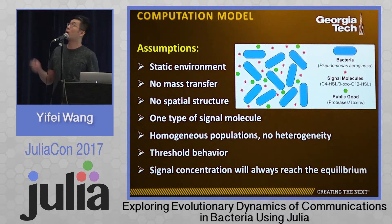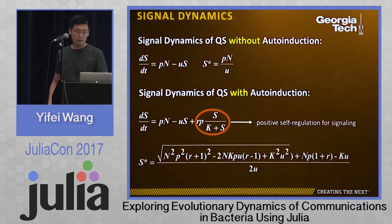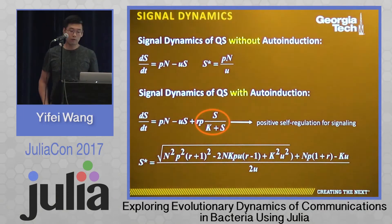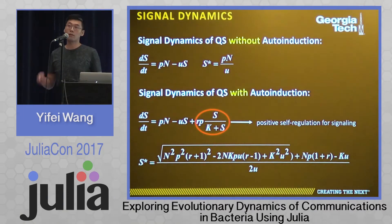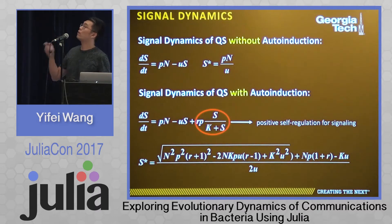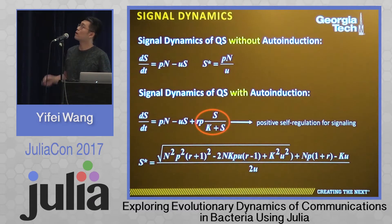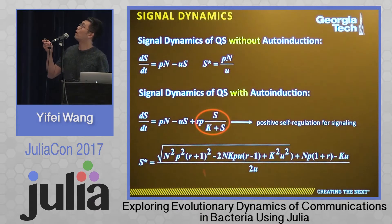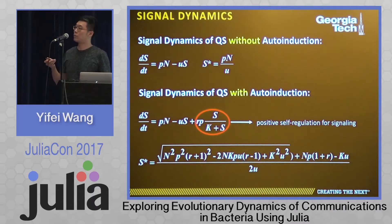There are a bunch of model assumptions, but hopefully we will relax some of them in future work. Based on the model assumptions, we can write down the first-order signal dynamics in a very simple form. The changing rate of signal concentration is equal to the production of signal subtracted from the loss of signal. Another important biological mechanism is auto-induction, which refers to a positive feedback loop to enhance the production of signal. We add one additional term to indicate the additional signal generated by the auto-induction mechanism.